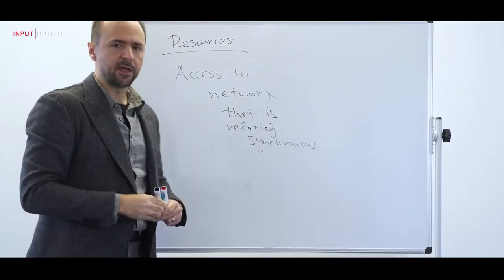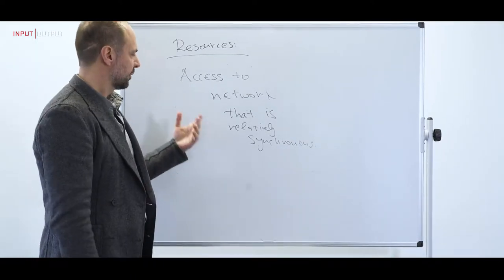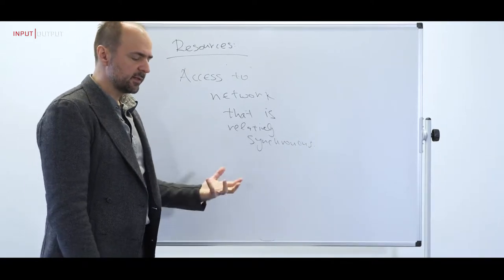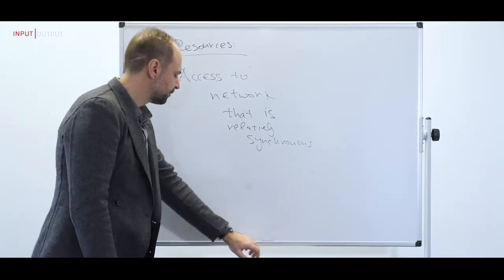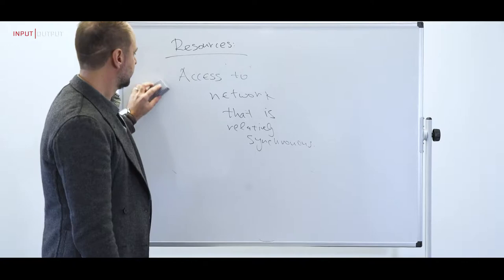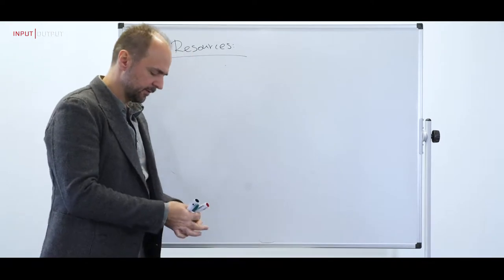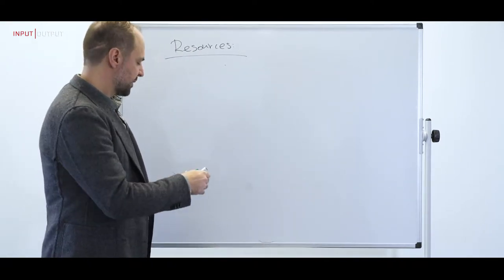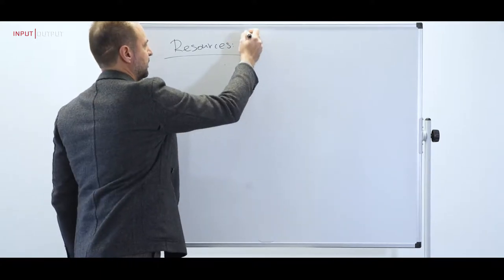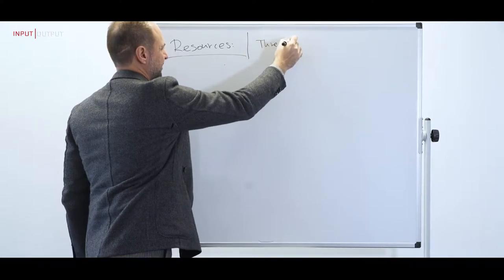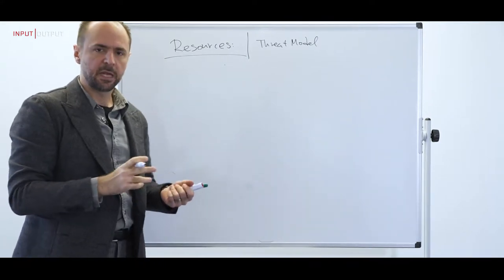Another resource should be access to a network that is relatively synchronized. This says that when a party wants to send a message, access to the network is facilitated, and in a relatively synchronous fashion that message is going to reach the other parties. Now in the threat model, we would like to specify what the adversary is capable of doing — the adversary should control a number of parties.